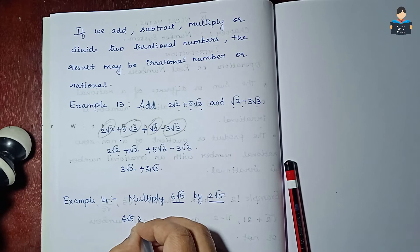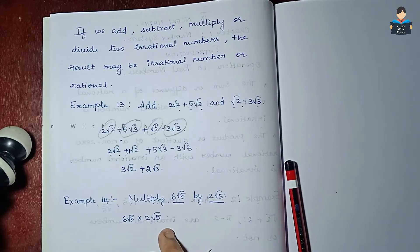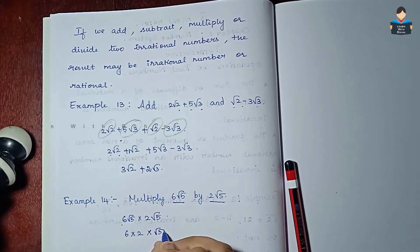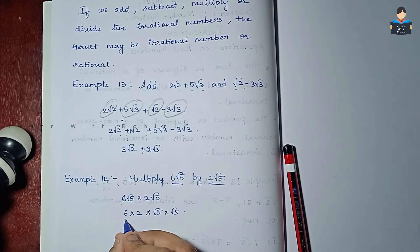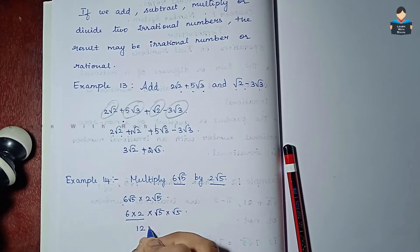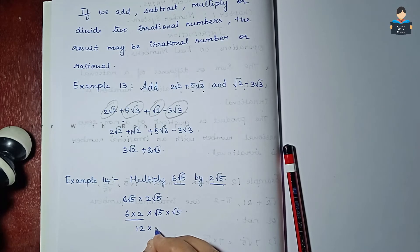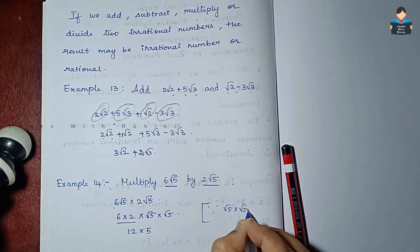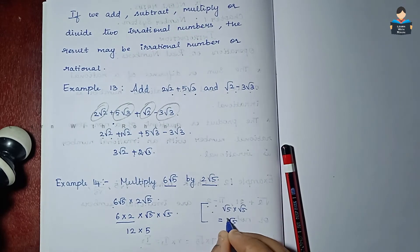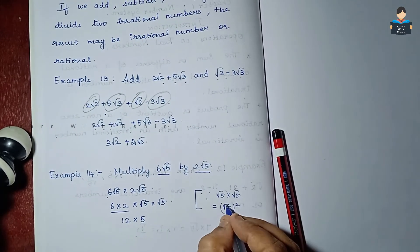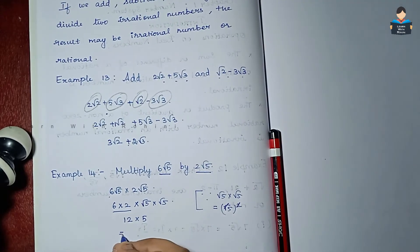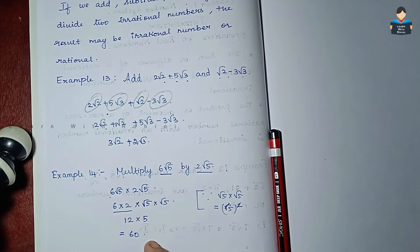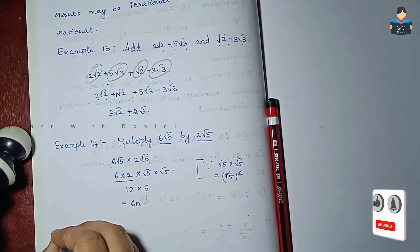6√5 into 2√5 equals 6 × 2 × √5 × √5. Since √5 × √5 = (√5)² = 5, the square and root cancel to give 5. So 12 × 5 = 60. Two irrational numbers multiplied give a rational number answer.